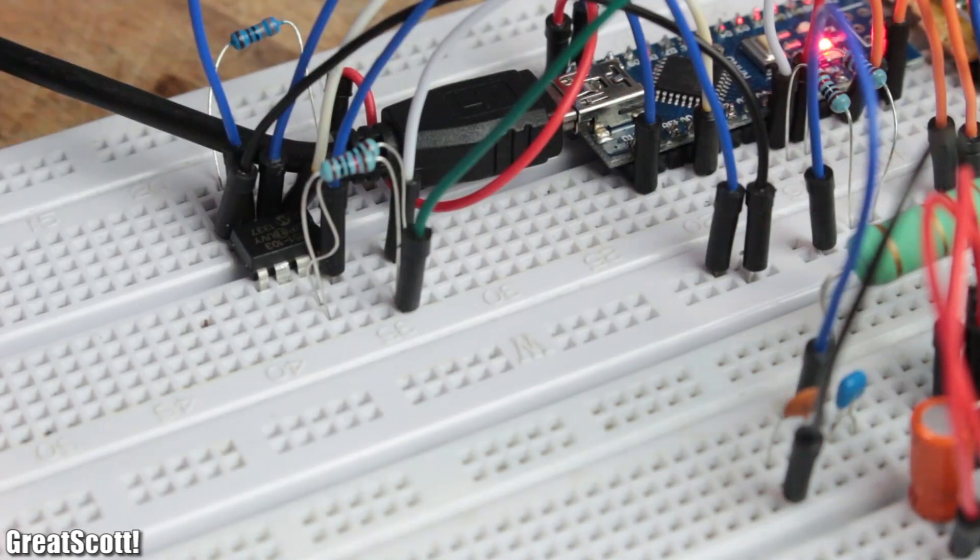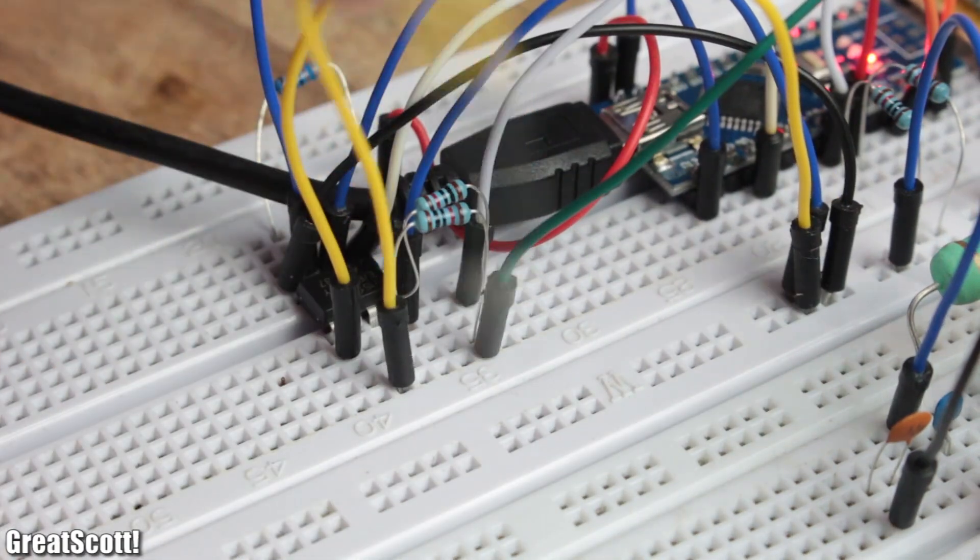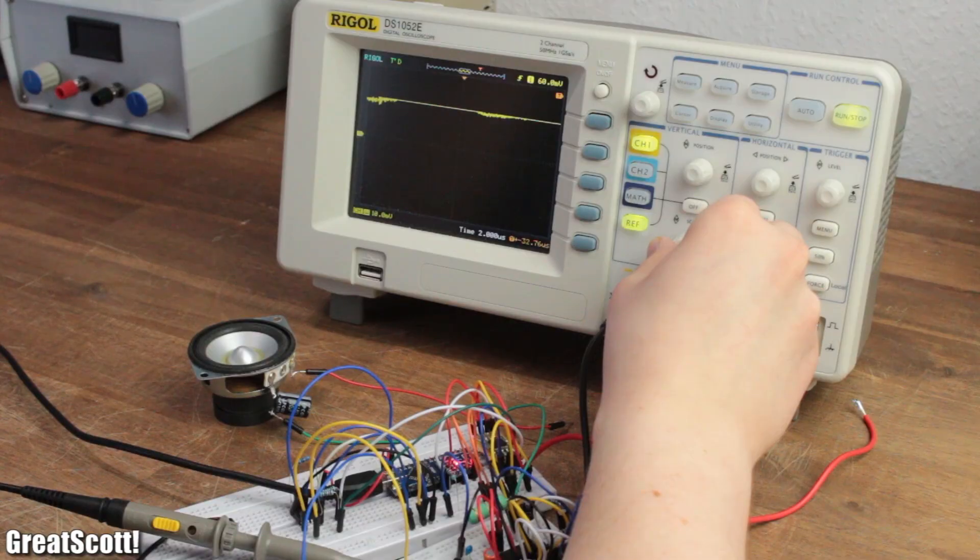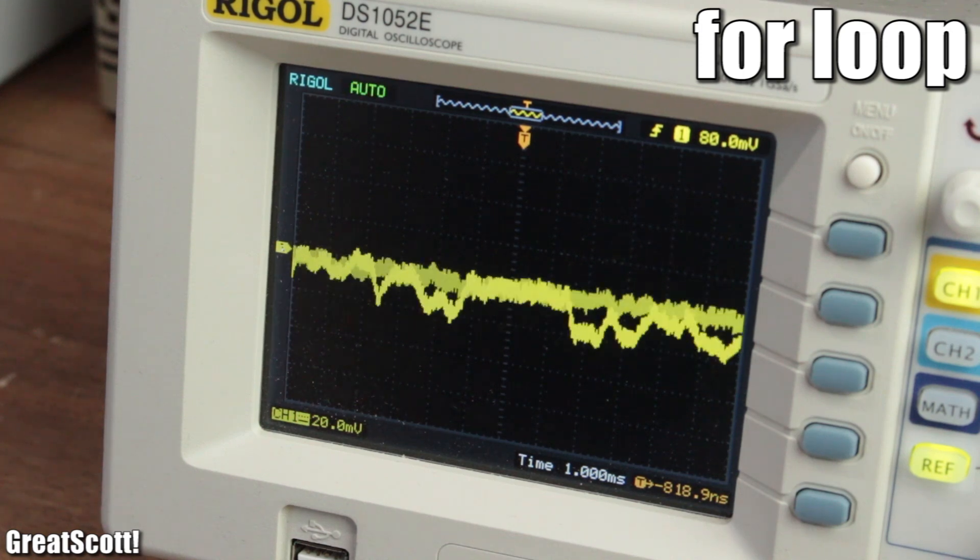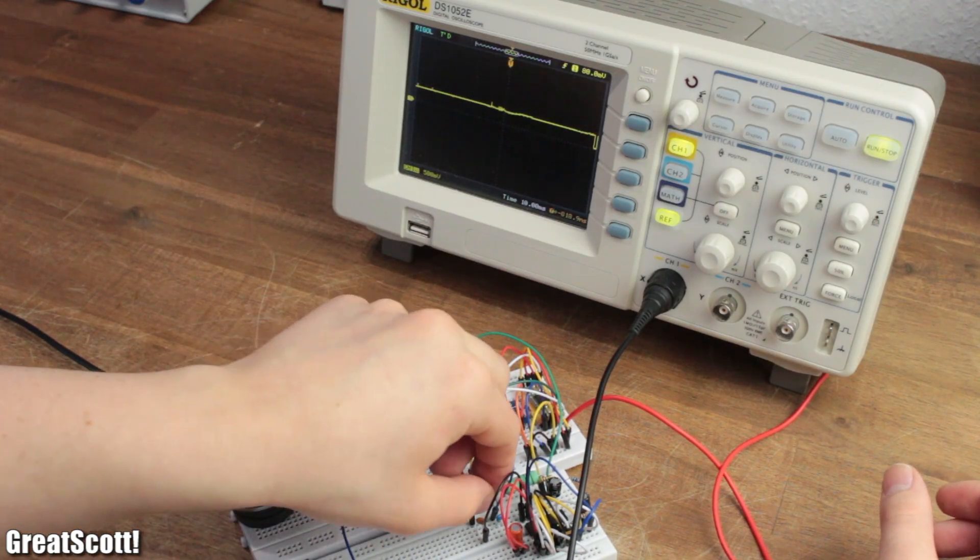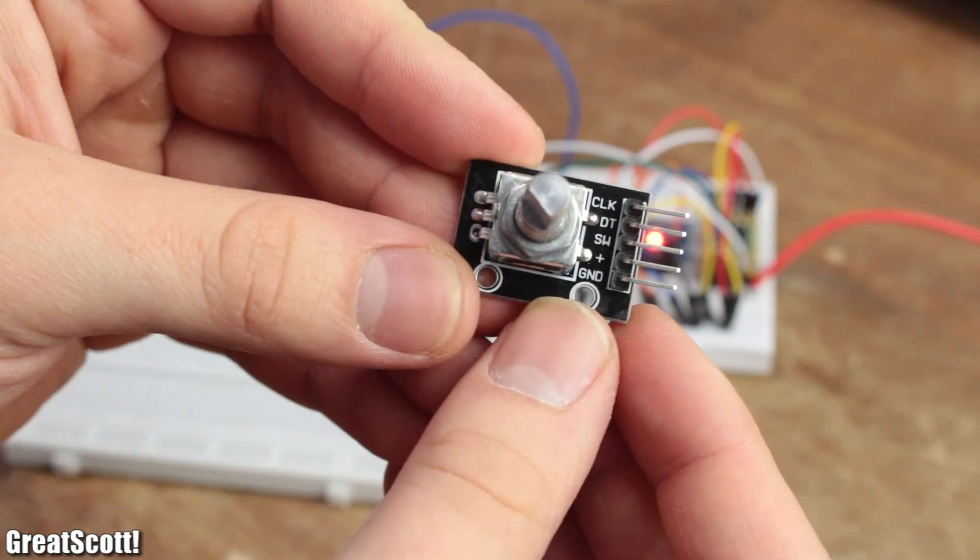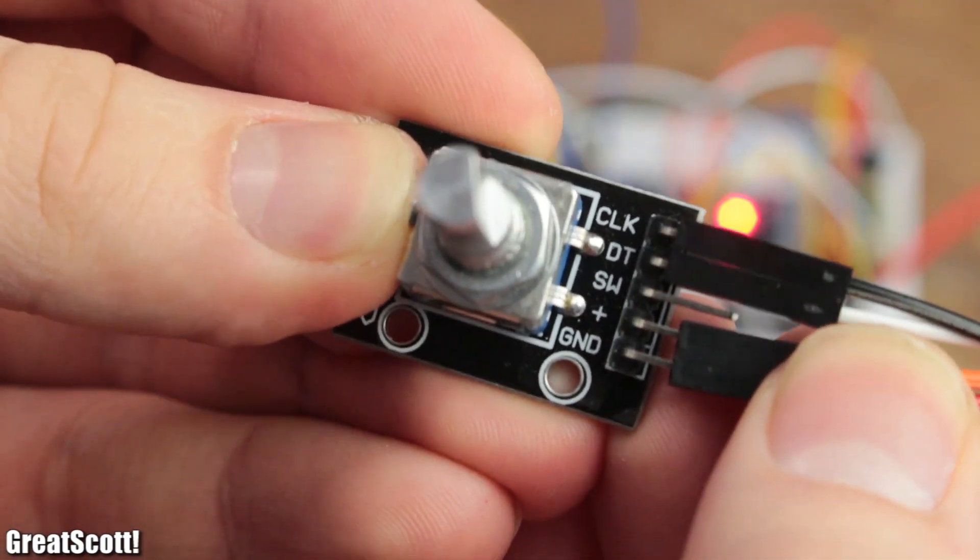By connecting the audio outputs of the FM IC to one side of the potentiometer, ground to the other side, and the wiper to the input of the audio amp, it acts like a voltage divider which can decrease the peak to peak voltage of the audio signal and thus the volume.